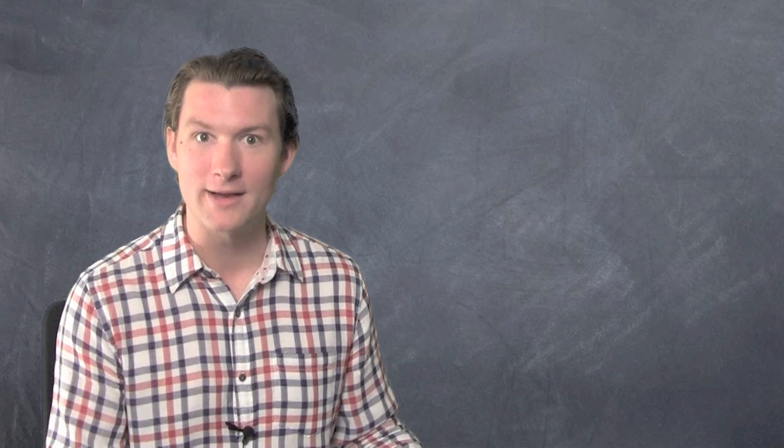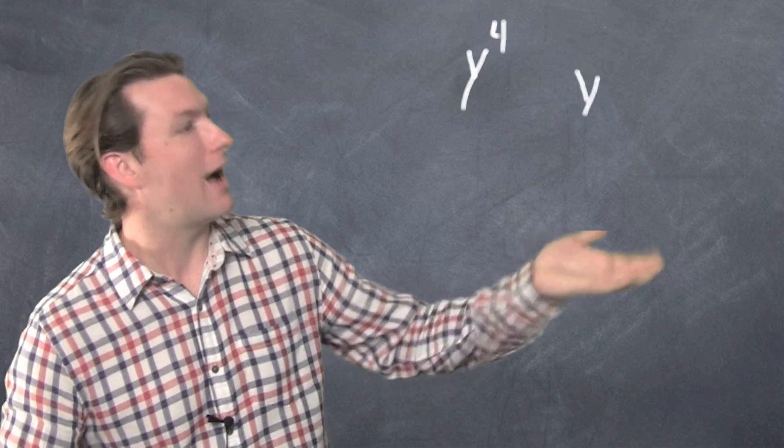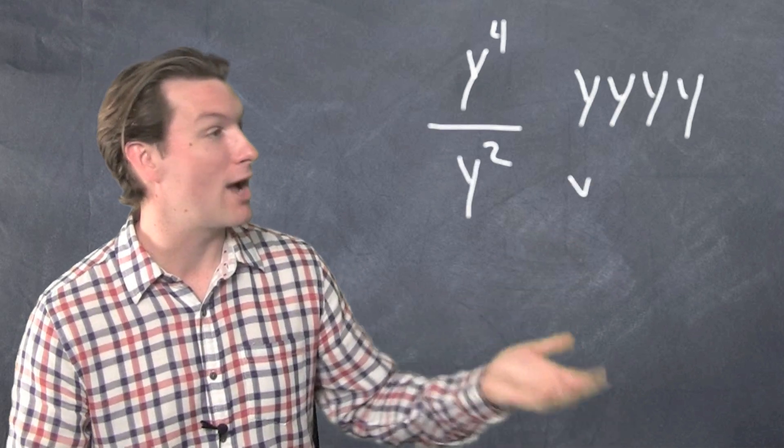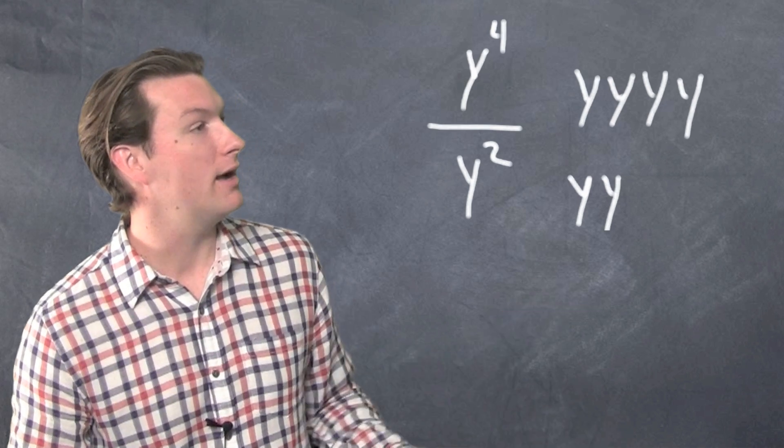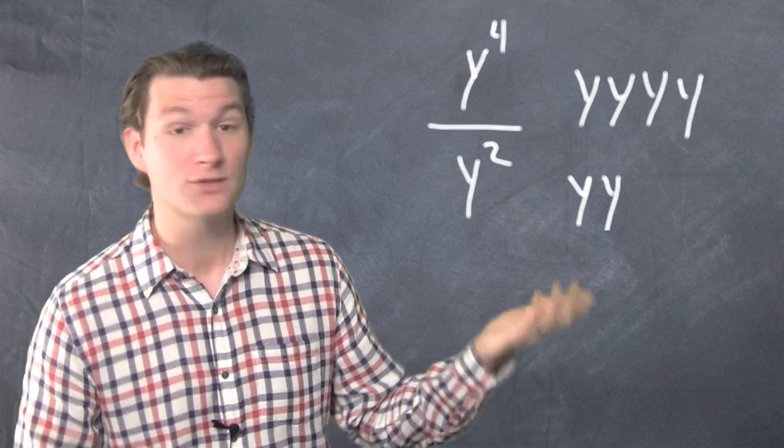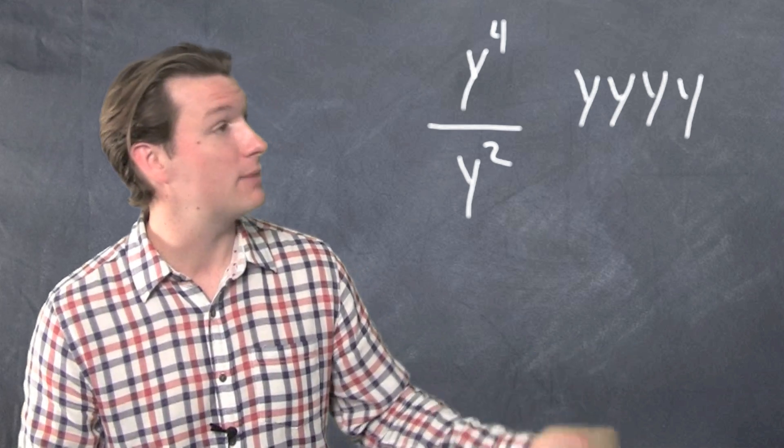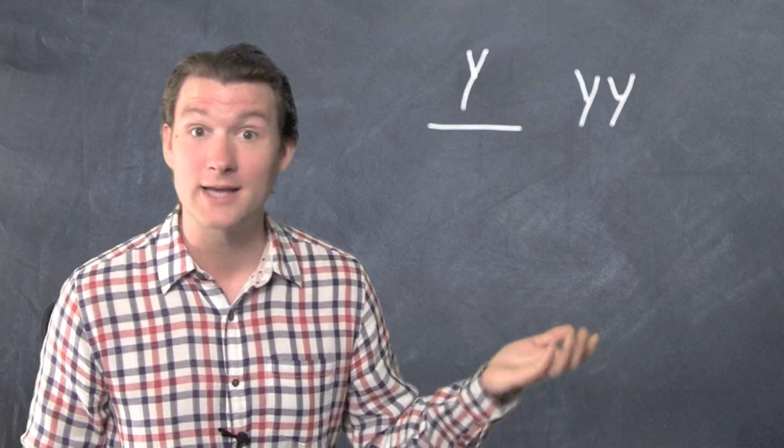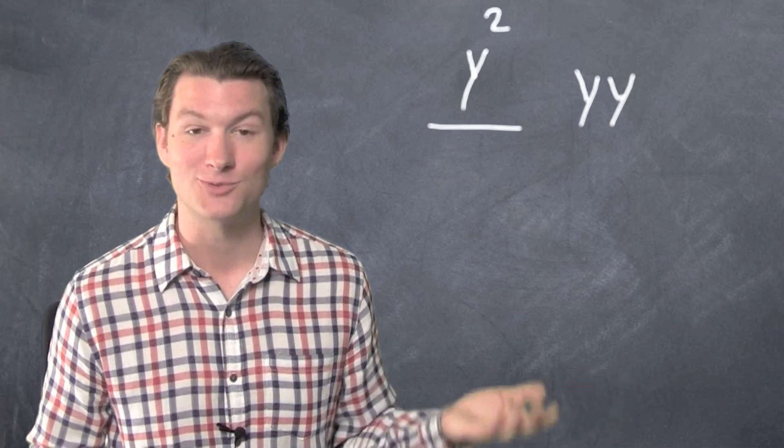The x's are done. Y's. We've got y, y, y, y up top, y⁴, over y². That's y, y. We've got a battle of the y's. I think the y's on top are going to win because there's four of them. Two of the guys on the bottom will take out two on the top, but there's still going to be two y's on top. y times y, also known as y².